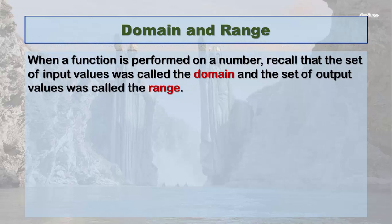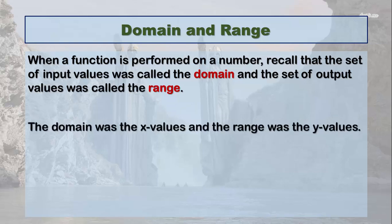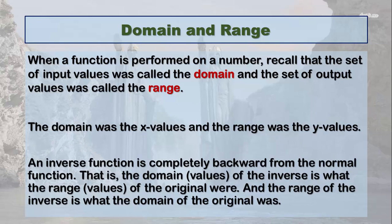First is about domain and range, and this is going to be kind of tricky to understand. When a function is performed on a number, recall that the set of input values was called the domain, and the set of output values was called the range. An inverse function is completely backward from the normal function. That is, the domain of the inverse is what the range of the original was, and the range of the inverse is what the domain of the original was.